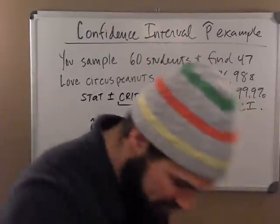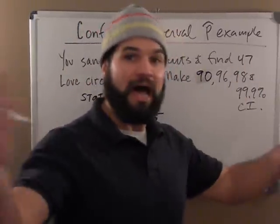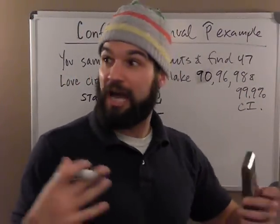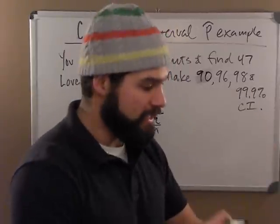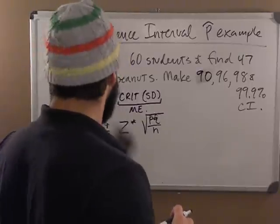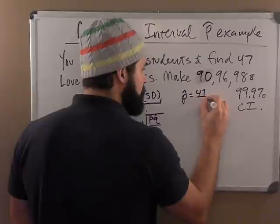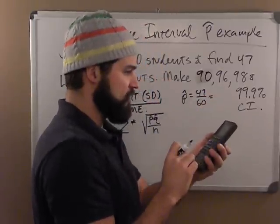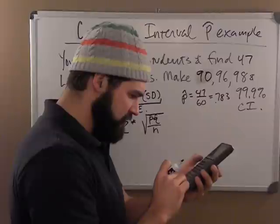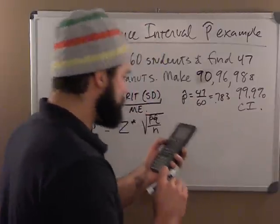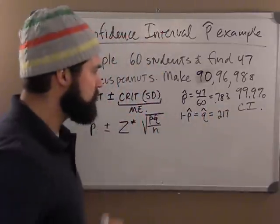Let's find my p-hat. You sample 60 and find 47 love circus peanuts. If 47 of my 60 like circus peanuts, my p-hat is 47 over 60, which is 47 divided by 60 = 0.783. When I do 1 minus that answer, I get 0.217. So my q-hat is 0.217, and my n equals 60.